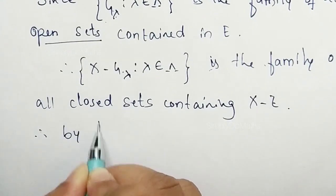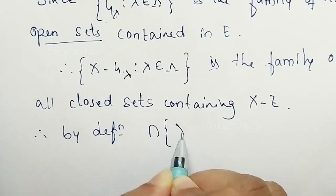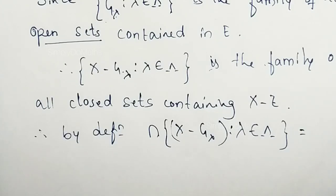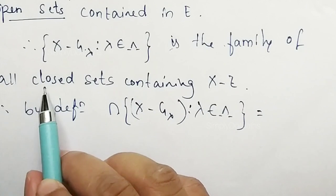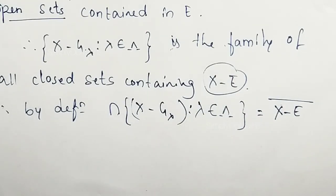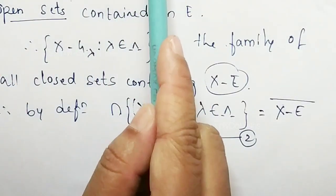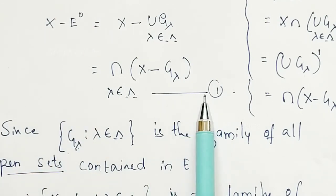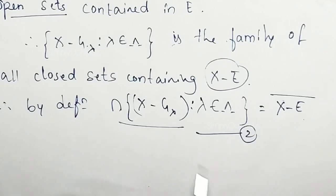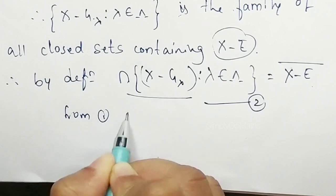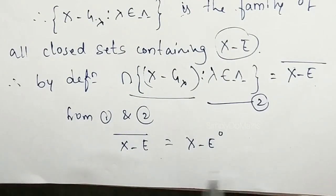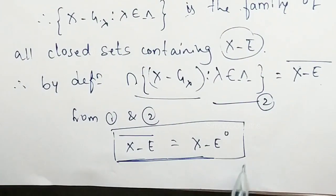Therefore, by definition, the intersection of X minus G_lambda, where lambda belongs to the index set, can be written as the intersection of the family of all closed sets, which by the definition of closure gives closure of X minus E. Call this equation 2. Now, from equation 1, X minus interior of E equals the intersection of X minus G_lambda, and from equation 2, that equals closure of X minus E. Therefore, from equations 1 and 2, we conclude that X minus interior of E equals closure of X minus E. This proves the result, which is very important.